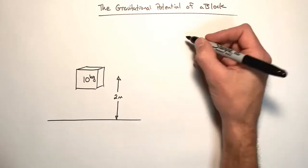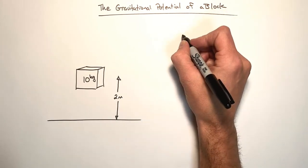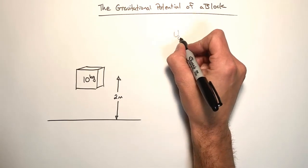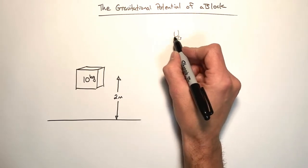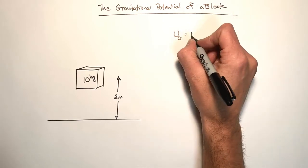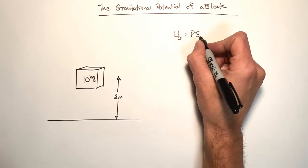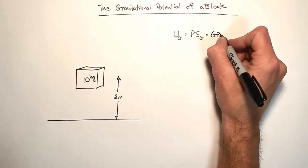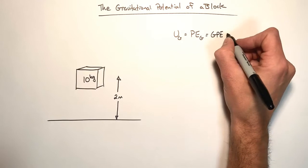And so we're going to use our equation for gravitational potential energy which we derived here. And that equation is gravitational potential energy. Whether you use U with a little g next to it, sometimes you'll see people use potential energy with a little g next to it, or sometimes you'll see people use GPE. Whatever floats your boat, that's cool, I don't care.